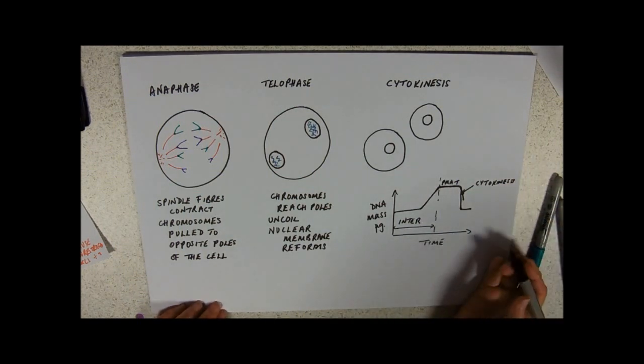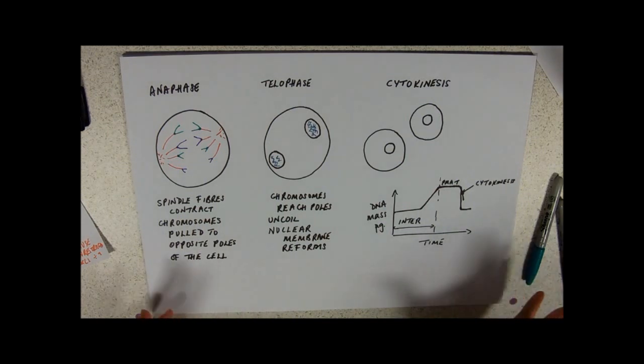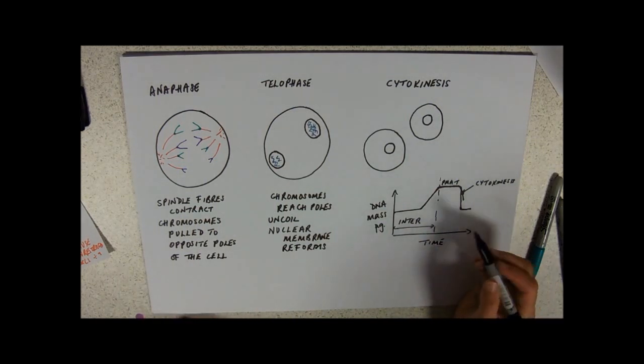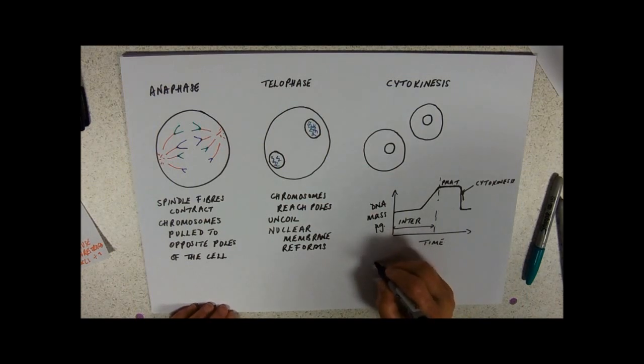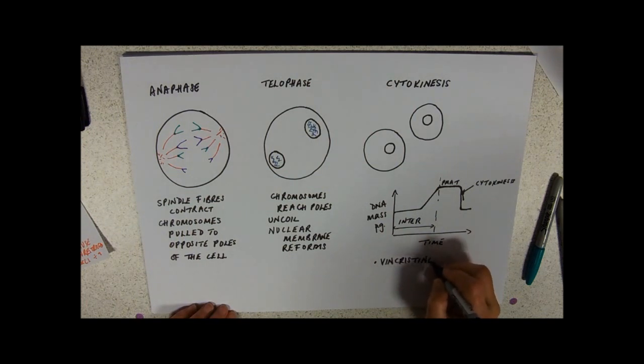And the other thing that they like to do is to tell you about some chemical that will stop that spindle formation. So you might see reference to, I have a feeling it's called vincristine or something. Colchicine is another one from the Autumn Crocus. Never eat a crocus bulb. And they both stop spindle formation.